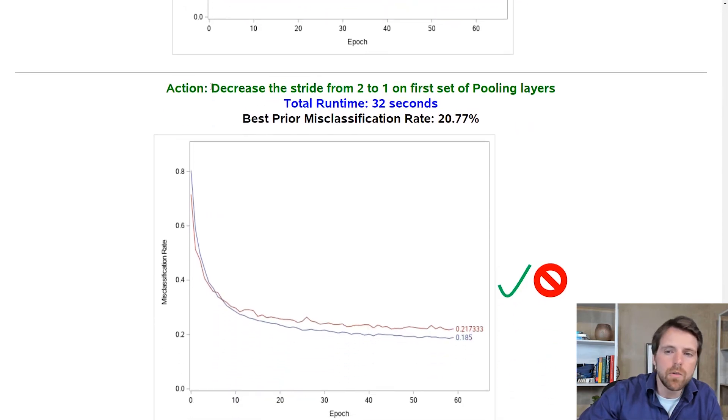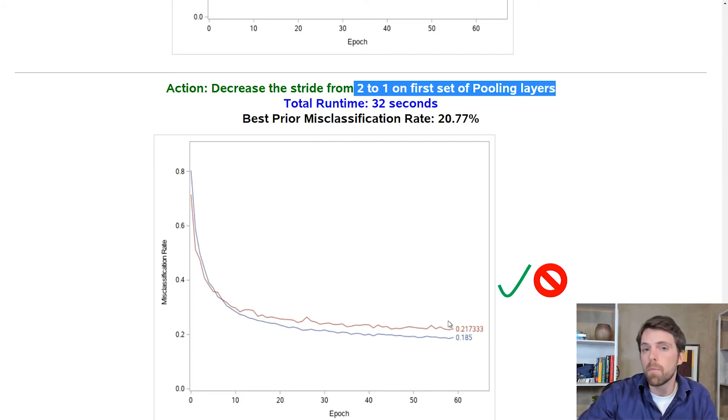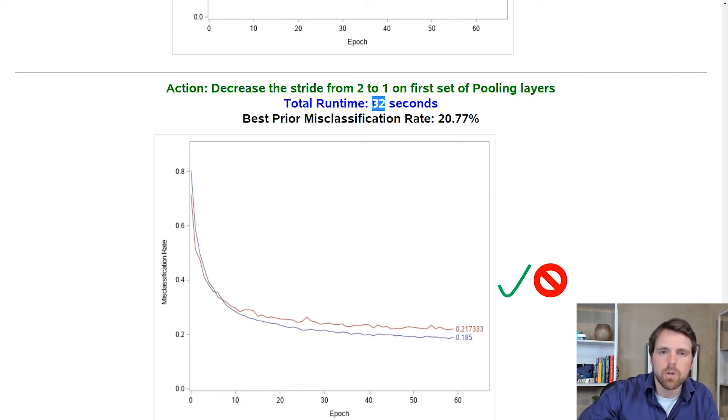Next I tried to decrease the stride from two to one on the first set of pooling layers. Now this actually improved the model quite significantly. We went from 20% misclassification down to about 18.5%. But the time that it took for me to train this model was quite substantial. So there was a large cost to this change. Ultimately I decided to not make this change. So I reverted back to the previous champion model.